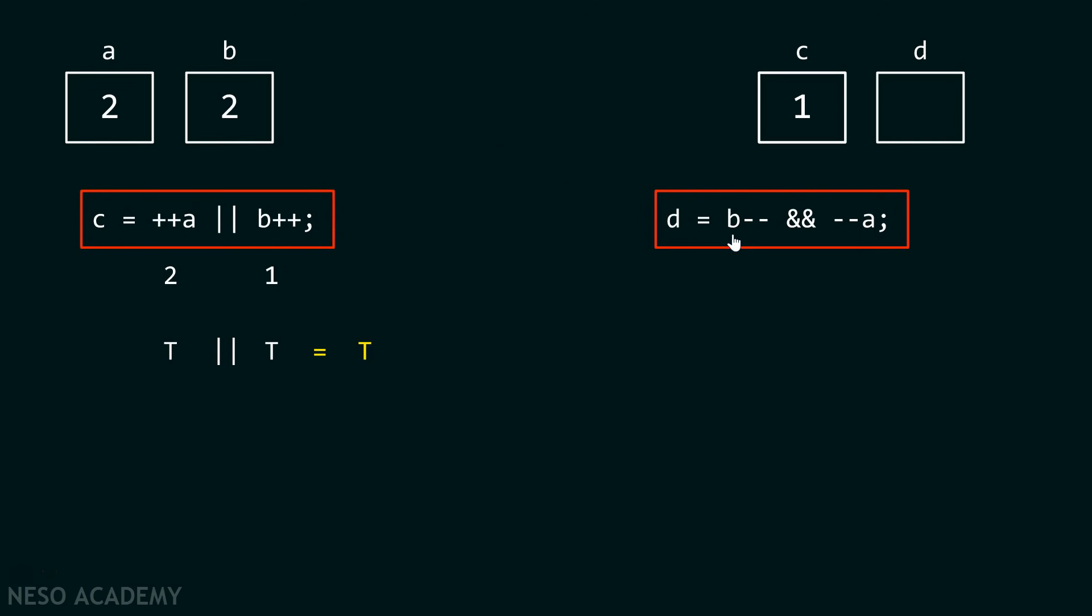After understanding this whole expression, let's move to this particular expression. Here we are decrementing the value of b, but we are post-decrementing the value. Therefore, value it will take will be 2. This means true. And --a means it will first decrement the value of a and then this value will be used in the expression. 1 means true. And true and true is equal to true.